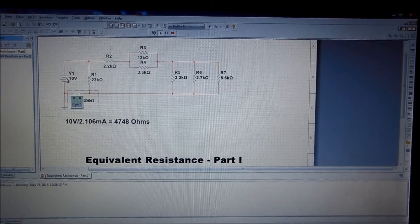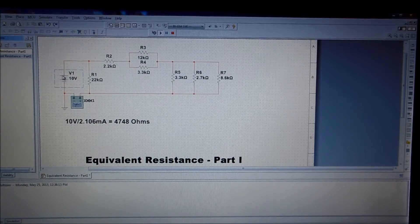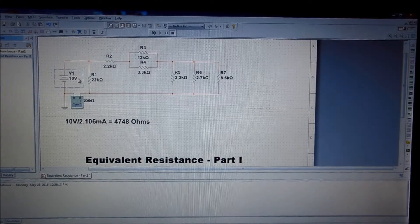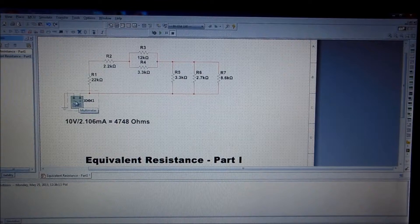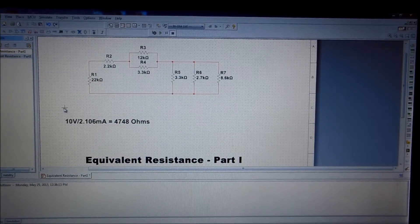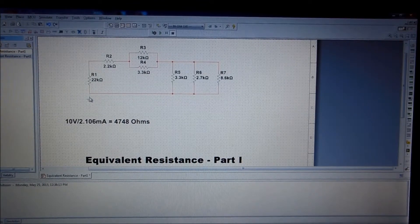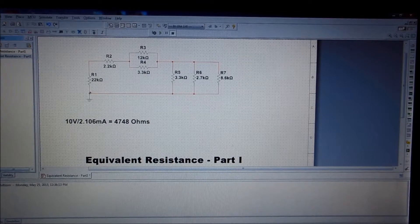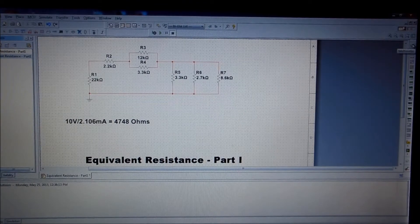Now what we can do is we can just get rid of that, if we first stop the simulation, then we can get rid of it. And what we can do is we'll delete that, we'll have to move this ground point back into position, connect it up, and what we'll try to do here is